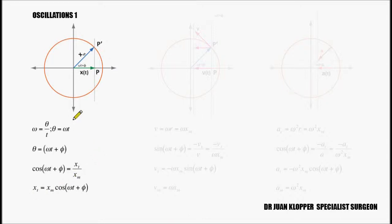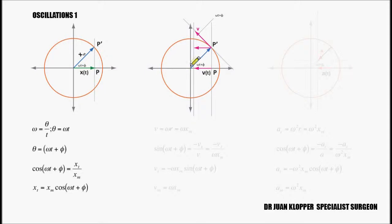Let's go on to velocity. If we take the first derivative with respect to time of our displacement equation, using basic calculus, we'll get to velocity. But you can also derive it from this figure. Here's our displacement again, and we've drawn the velocity vector. This velocity vector is tangent to the curve at all times, because it's the first derivative. Note that in the first quadrant it points in the negative x direction, so it is going to be negative. Look also where we've drawn the angle omega t plus phi — if you know some basic Euclidean geometry, you can see why this angle up here would also be omega t plus phi.